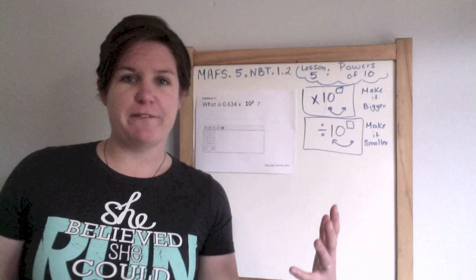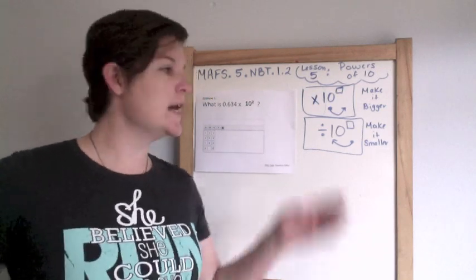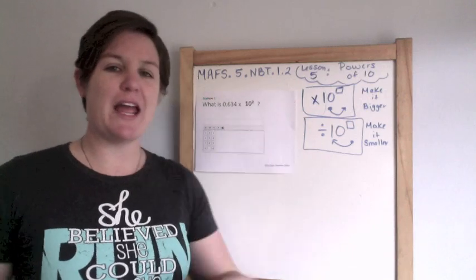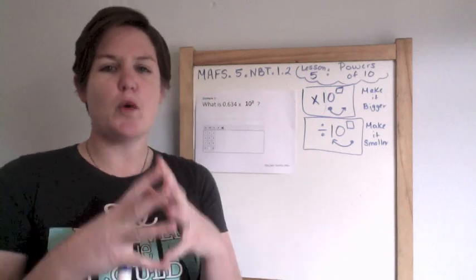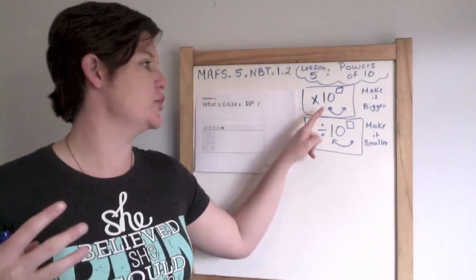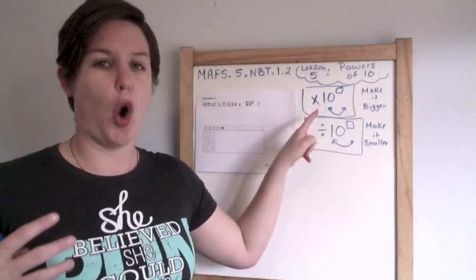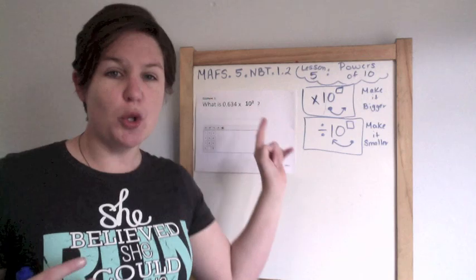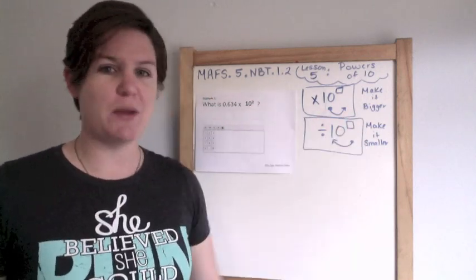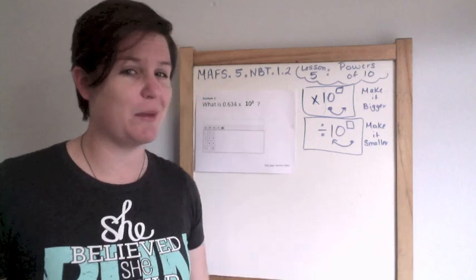Alright, everybody. So before we begin with example one, let me teach you this real quick. When you multiply by a power of 10, you are making your number bigger, larger, greater. So you're shifting your decimal point to the right. That's right to the right, because you're making it bigger.